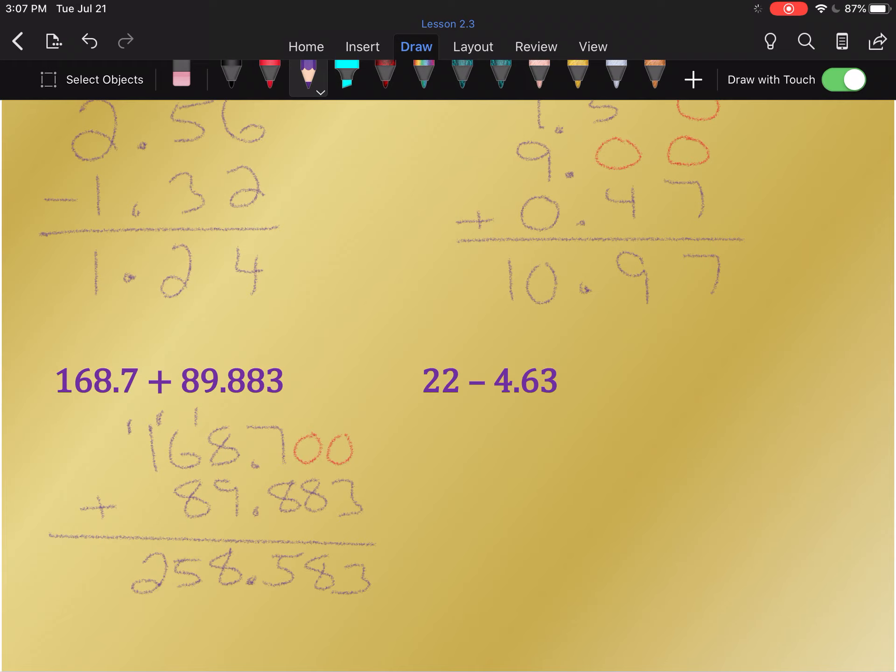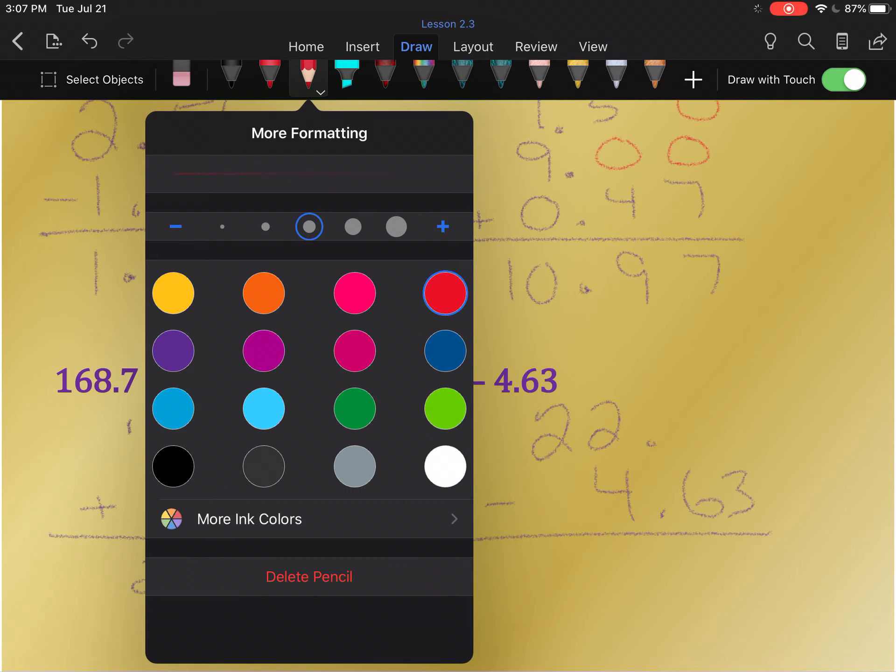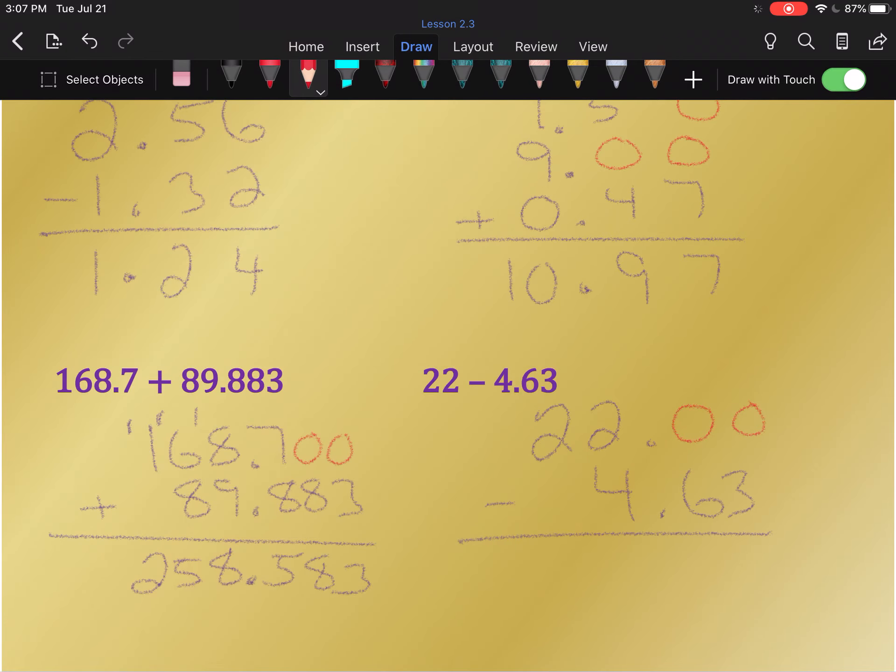And then we have 22 minus 4.63. So 4 is in the ones place, it goes underneath the 2 that's in the ones place. Which means these aren't quite the same length. That's okay, there's an invisible decimal point on the end of 22, and we can add some zeros after it.